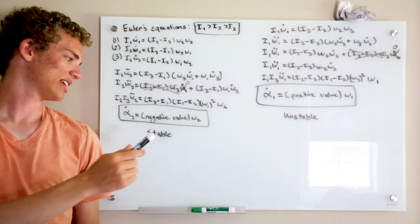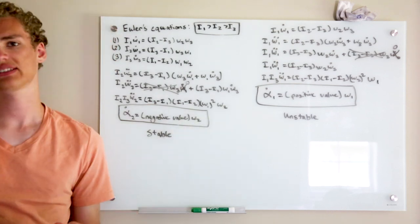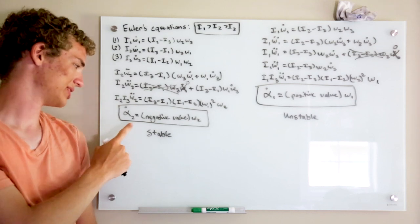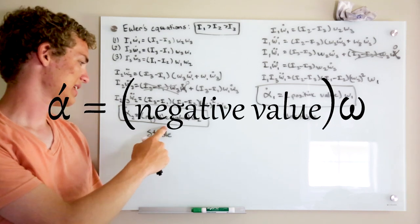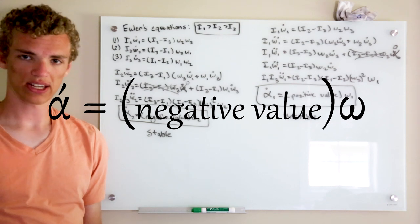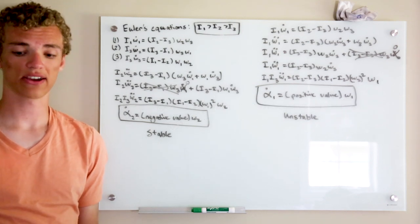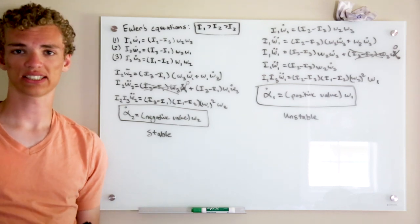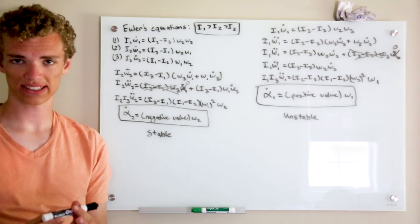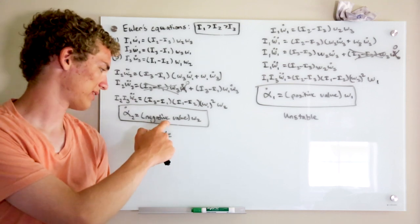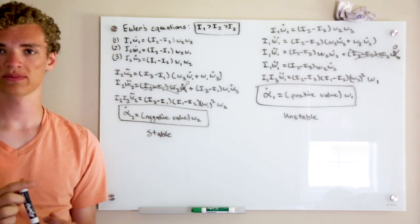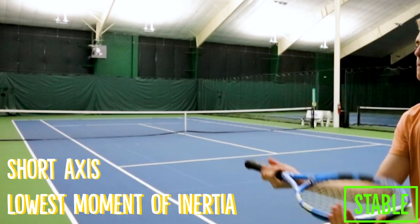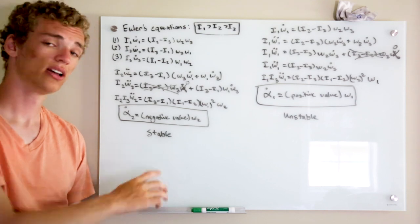I made two equations: one for the intermediate axis and one for the long axis. The intermediate axis equation says that the change in angular acceleration over time equals a negative value times the angular velocity. This means that if an object rotating around its short axis experiences a slight disturbance causing rotation along the intermediate axis, it's opposed by that negative value, causing deceleration along that axis. That's why rotation around the short axis is very stable and smooth.